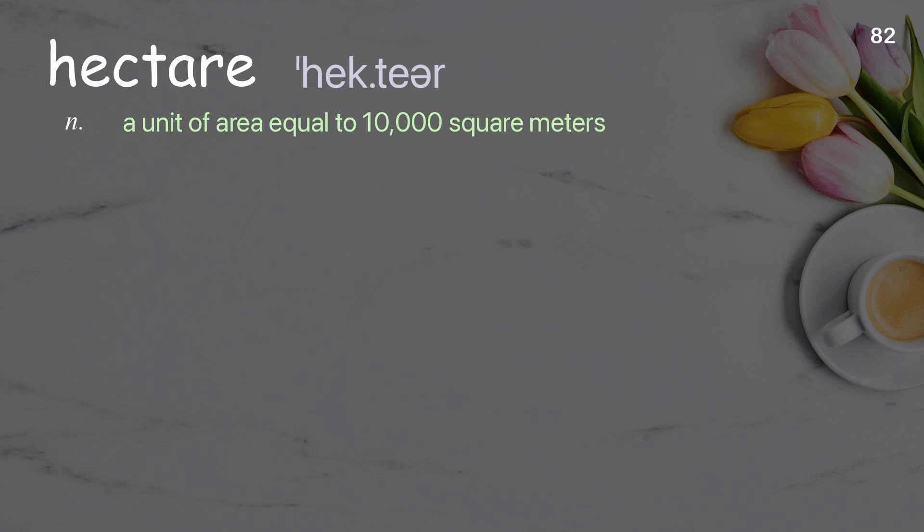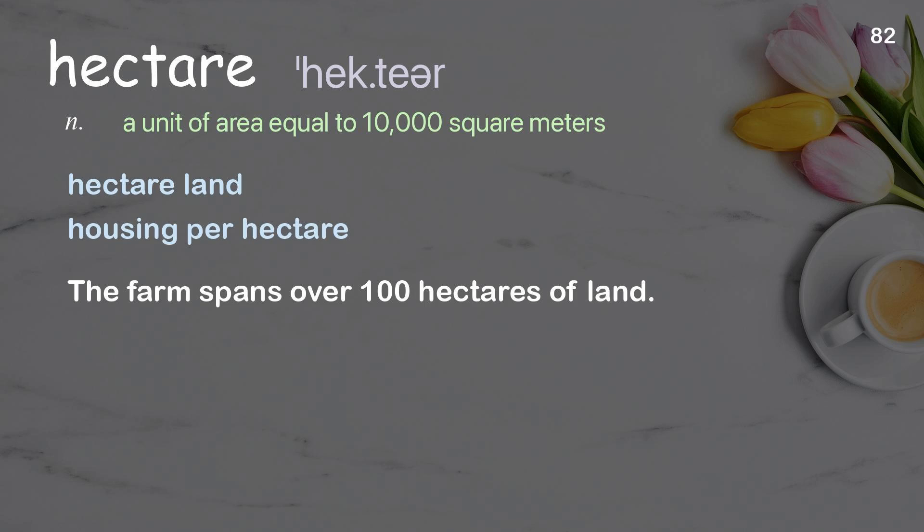Hectare. A unit of area equal to 10,000 square meters. Examples: hectare land; housing per hectare. The farm spans over 100 hectares of land.